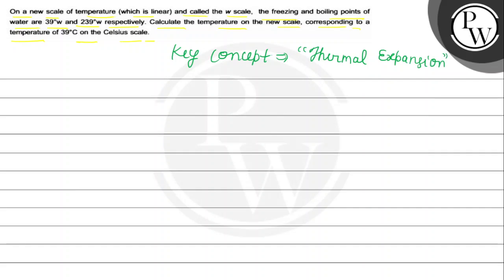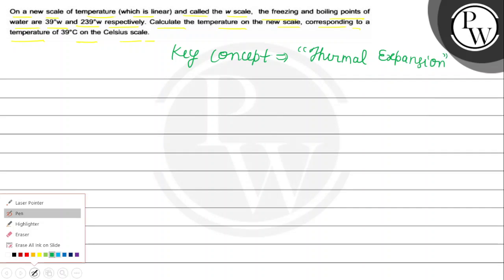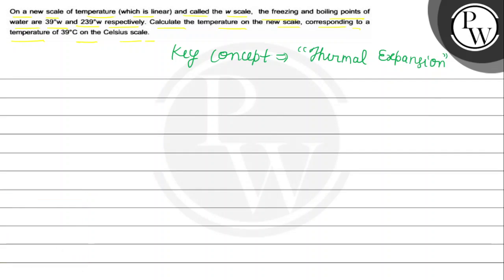We know that a linear scale has a fixed ratio. The ratio of temperature is: T minus T-freezing point, upon T-boiling point minus T-freezing point. This temperature ratio is fixed for any linear scale.